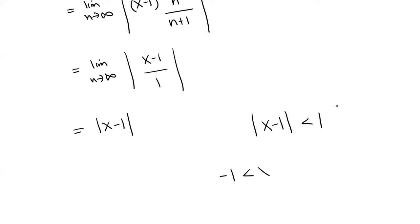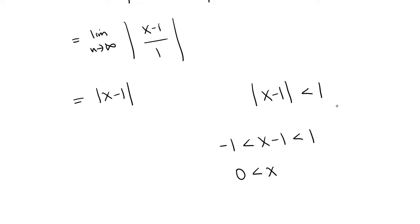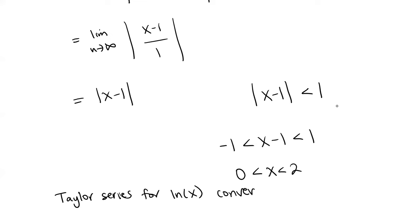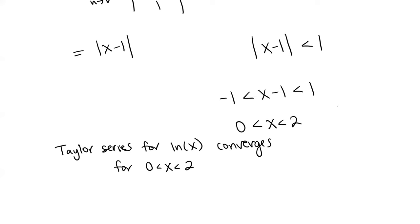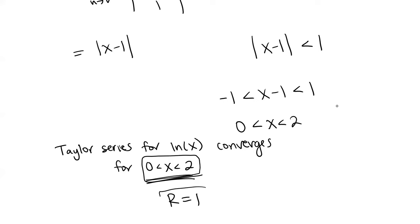We have the absolute value of x minus 1 less than 1, which means negative 1 is less than x minus 1 is less than 1. Adding 1 across, we get 0 less than x less than 2. So this Taylor series will converge for x values between 0 and 2. We won't talk about the endpoints, but this will not converge for x equals 0. So here is our interval of convergence. Our radius of convergence is 1, because the interval is 2 units wide, and the radius of convergence is half the width of the interval of convergence.